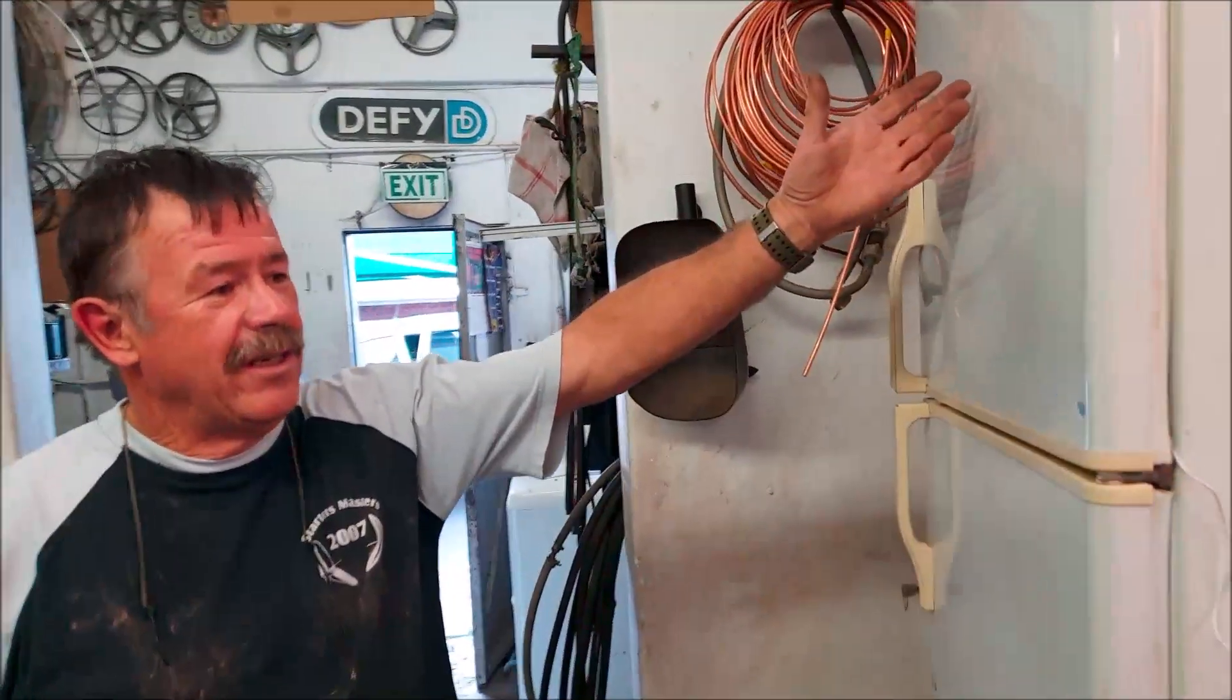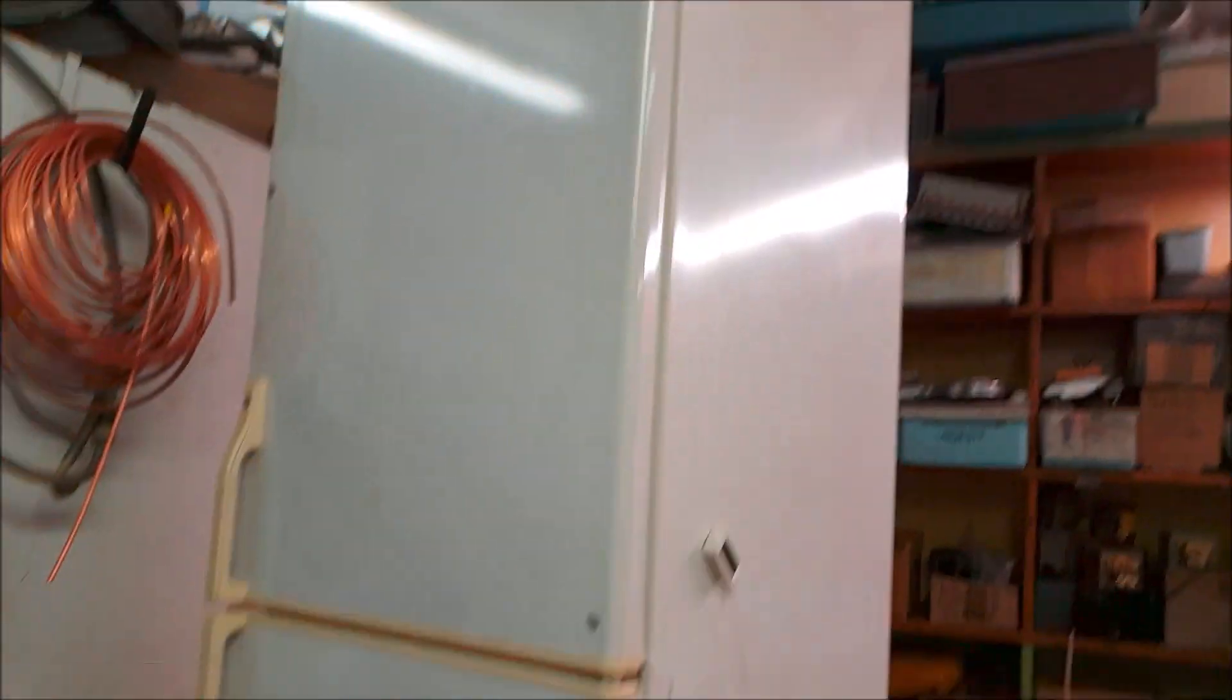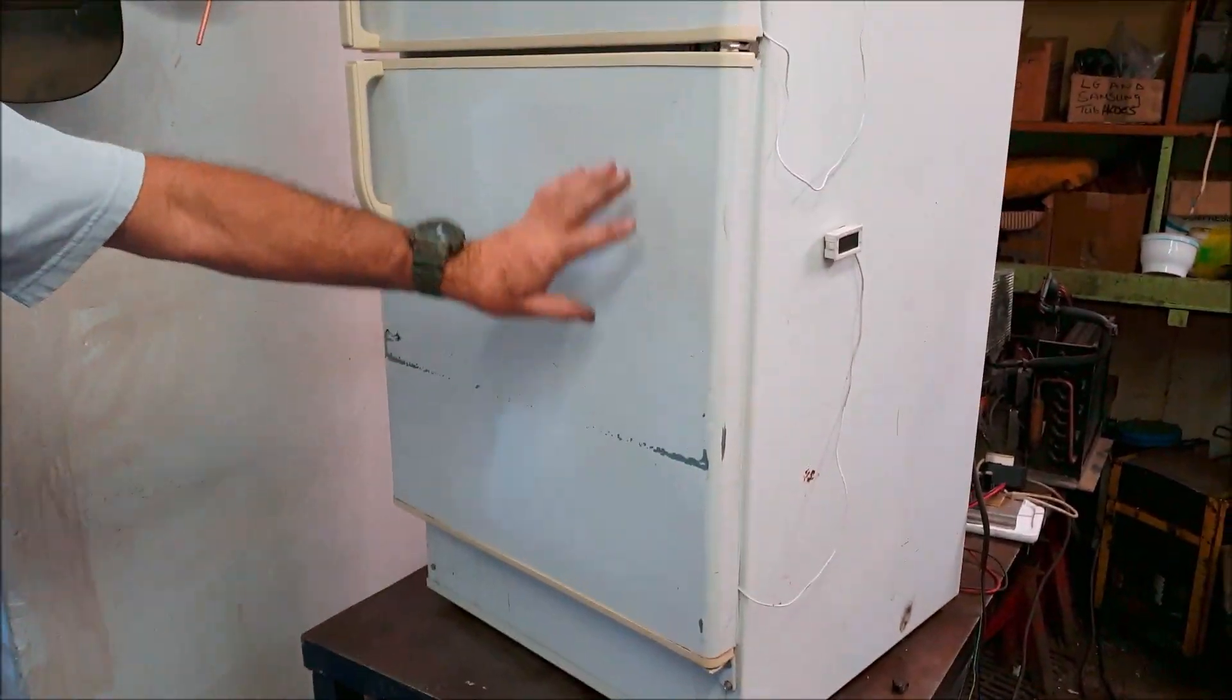This is the KIC domestic fridge. The top is the fridge, the bottom is the deep freeze. Quite old, it's got a few marks on it.